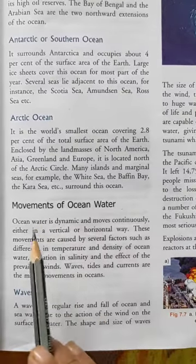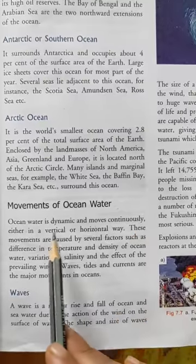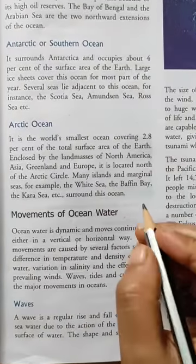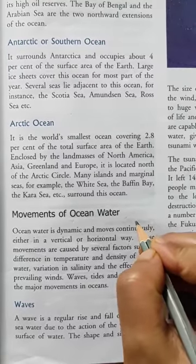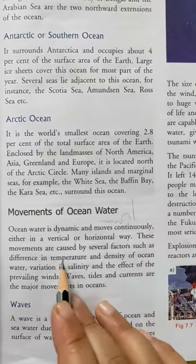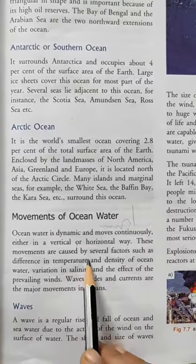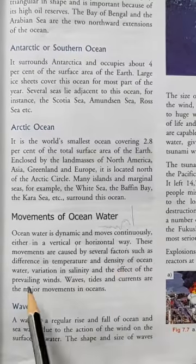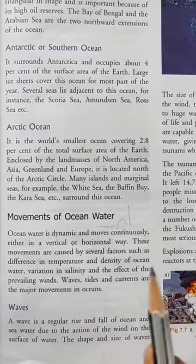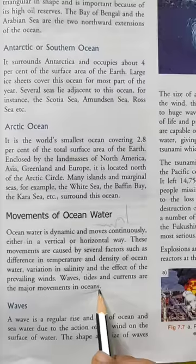Ocean water is dynamic and moves continuously, either in vertical or horizontal ways. These movements are caused by several factors such as differences in temperature and density of ocean water, variation in salinity, and the effect of prevailing winds. Waves, tides, and currents are the major movements of ocean water.